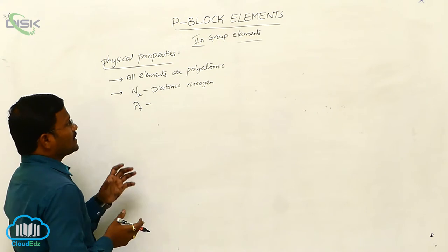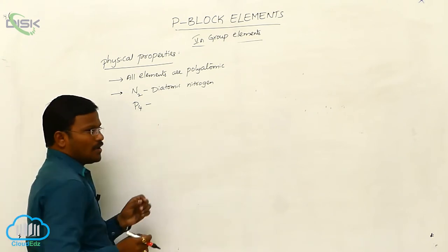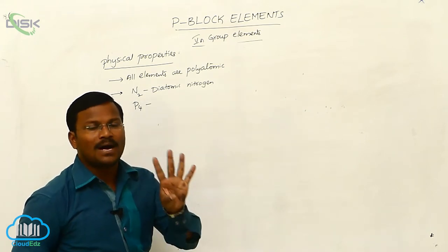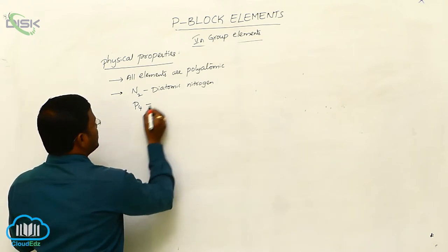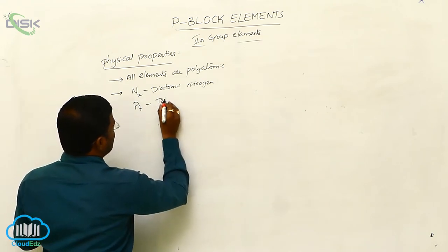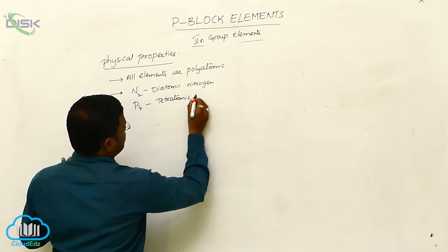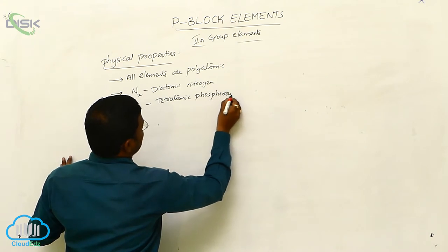So what is the atomicity of phosphorous is 4. That means, to produce a phosphorous molecule, four phosphorous atoms combine with each other. Hence, it is called as tetraatomic. P4, or tetraatomic atom.